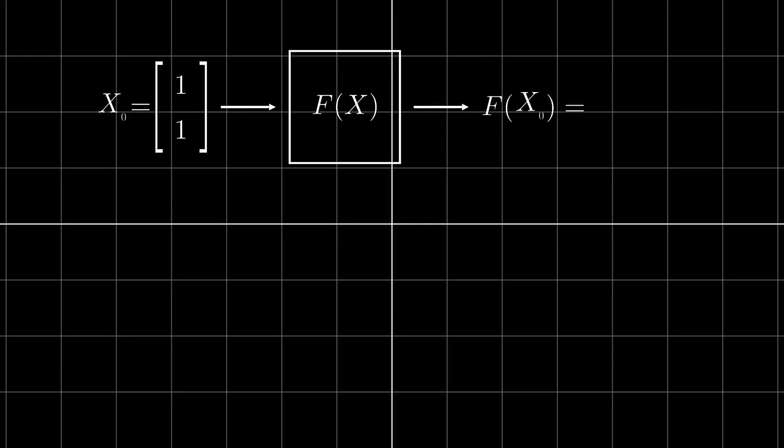As we did before, let's make an initial assumption. But remember, now we have two inputs. So, let our assumption be, say, 1 and 1. Plugging it into our system of equations, we get 1.84 and 1.54.